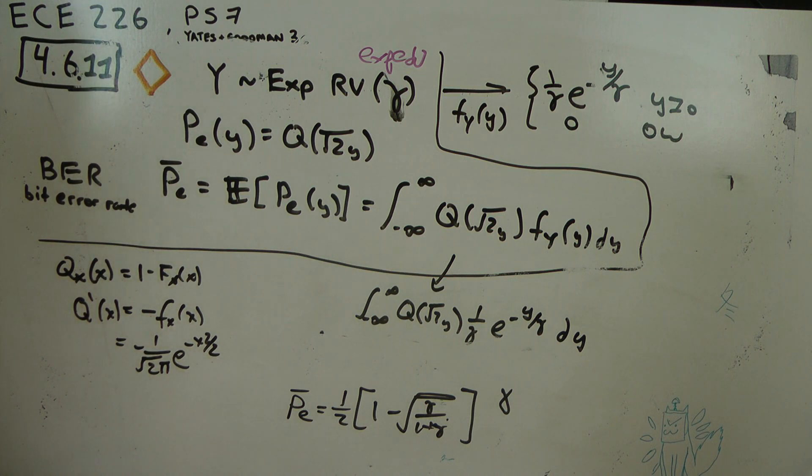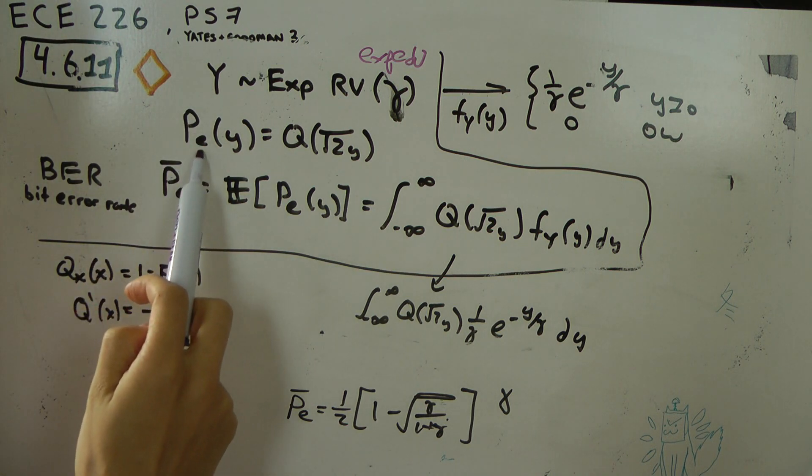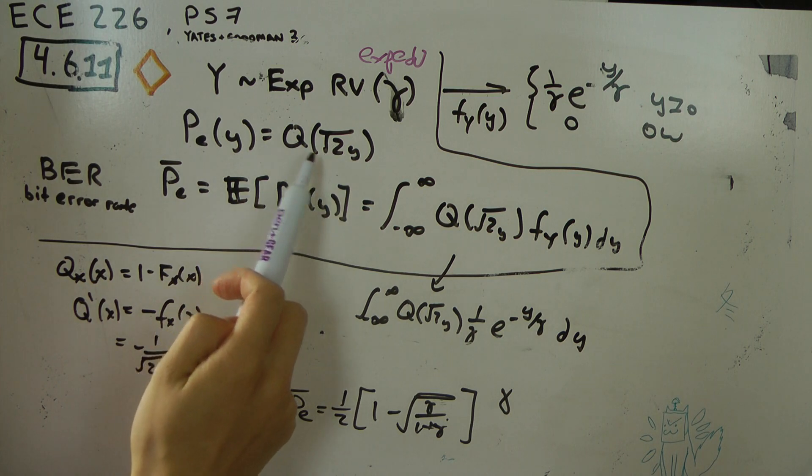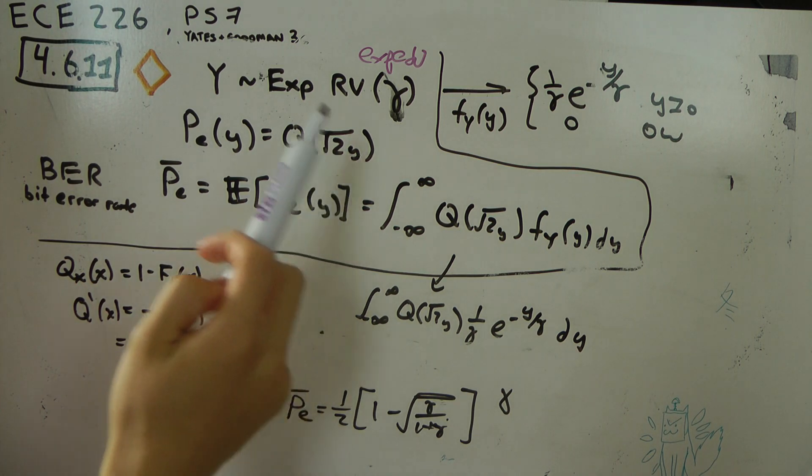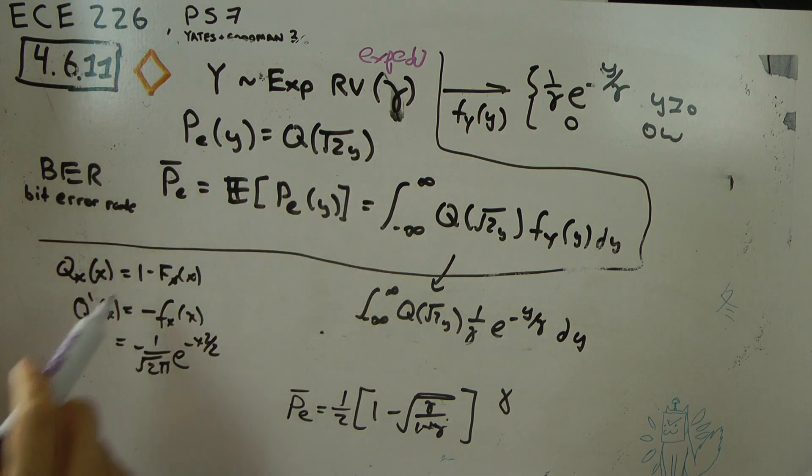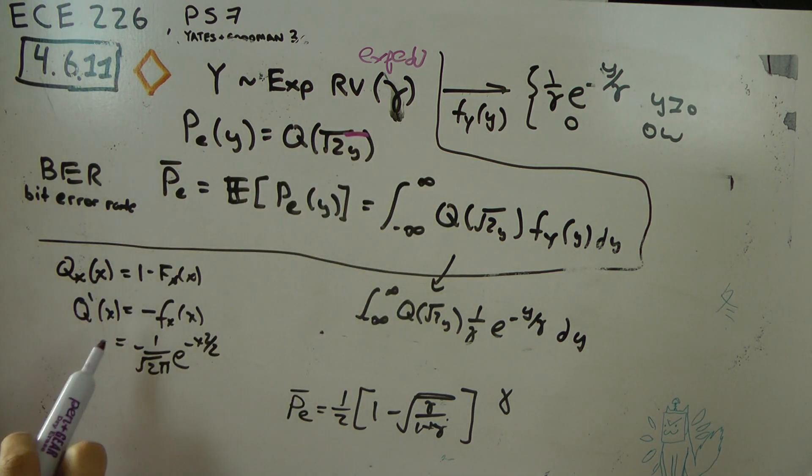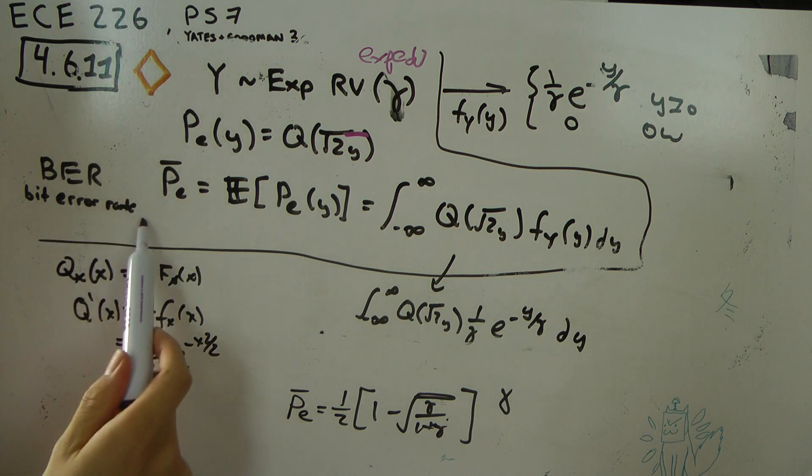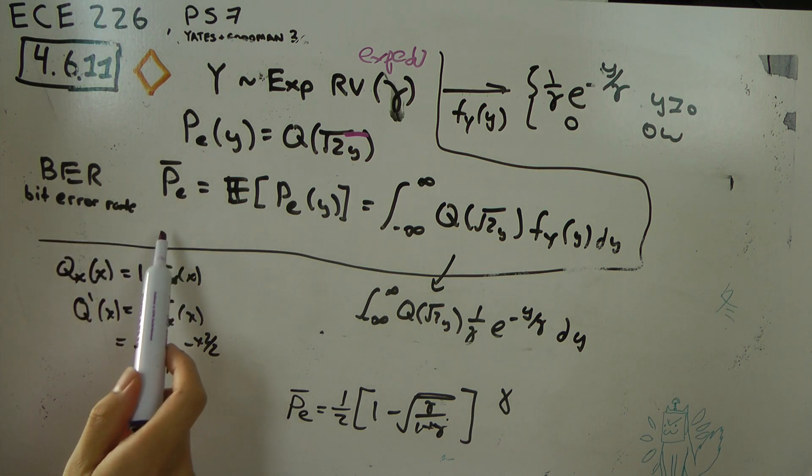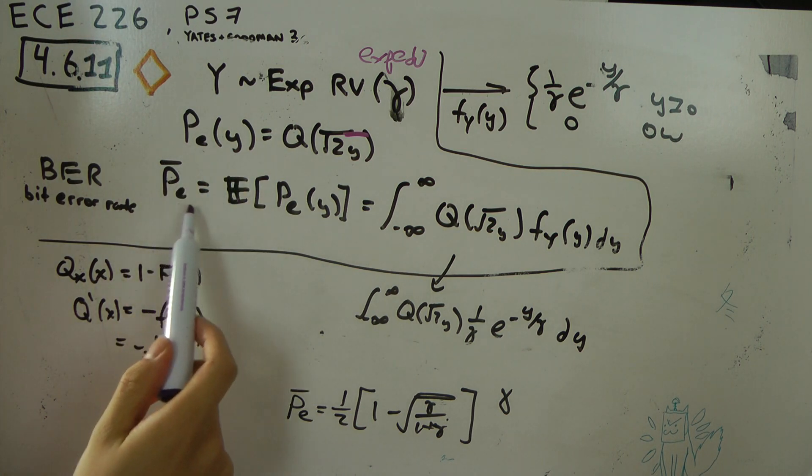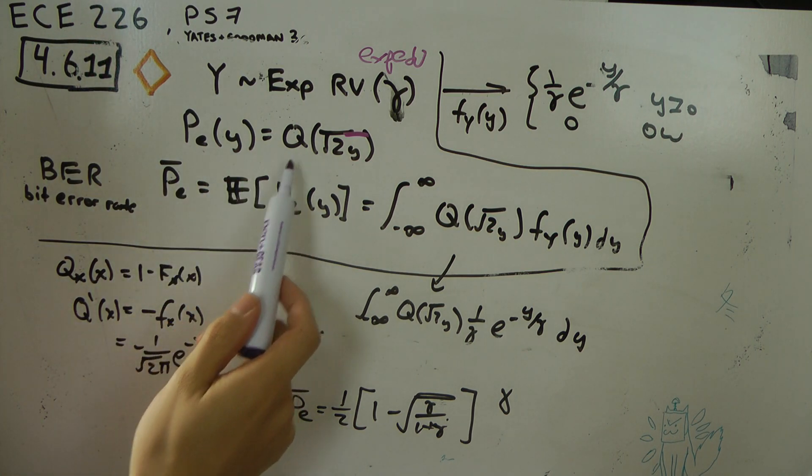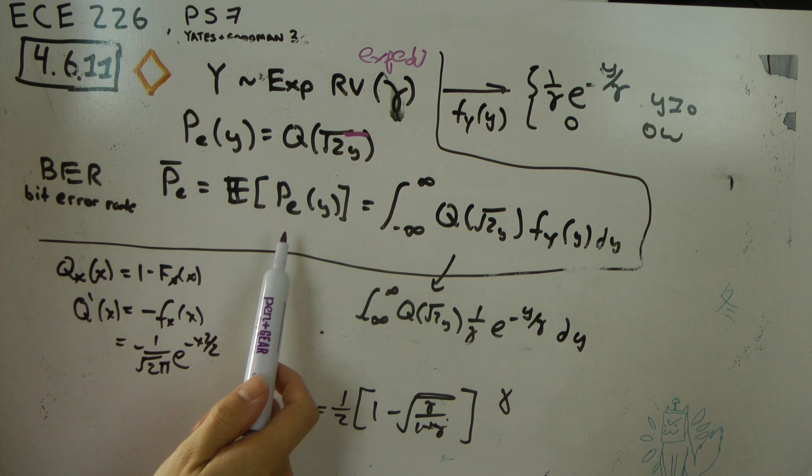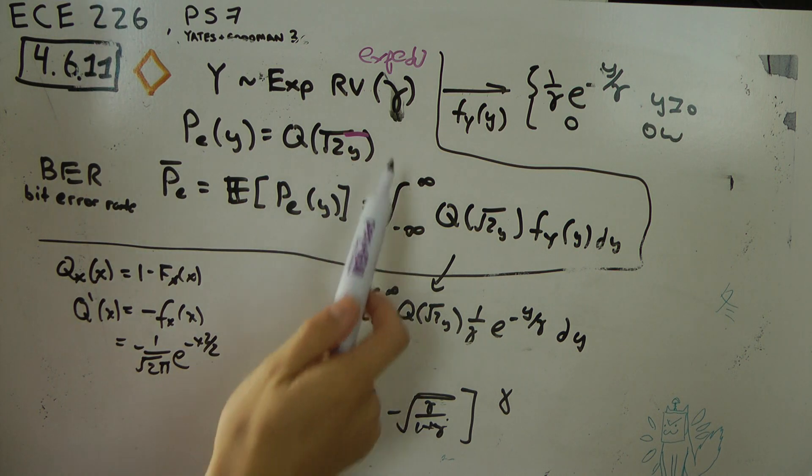We're given this probability of error, P_e for error, which is this tail function of root 2Y. The Y is under the square root, and we're looking for this bit error rate, which is the expected amount of error of this tail function. You can learn how to derive this in communications.